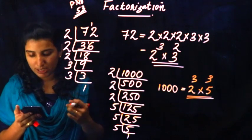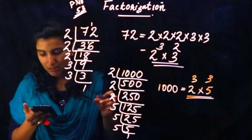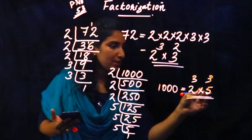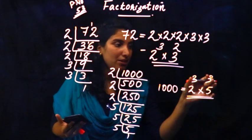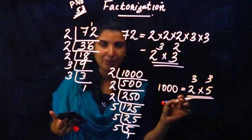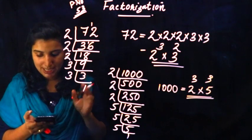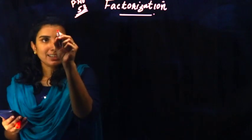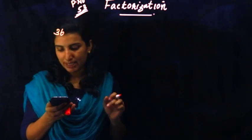Try to write the numbers below as product of powers of prime numbers. Write down the numbers given below as product of powers of prime numbers. Now, if we have prime numbers, we have powers and product — we have to factor the number.